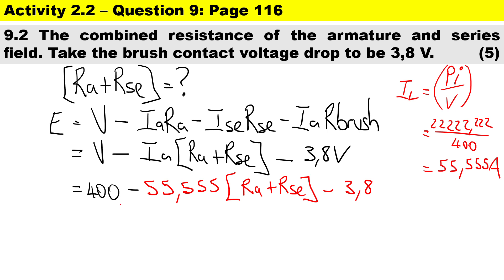Just a reminder that the back emf that was given to us was 375 volts. So we've got the back emf, we've got the terminal voltage, here's a multiplication sign, here's a subtraction sign. So just doing a little bit of math, taking 3.8 across will become a plus, taking the 400 across will become a negative, divided by negative 55.555. This means that Ra plus Rse should work out to 0.382 ohms.